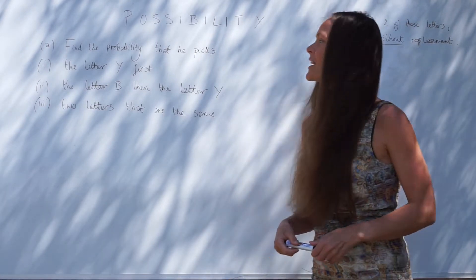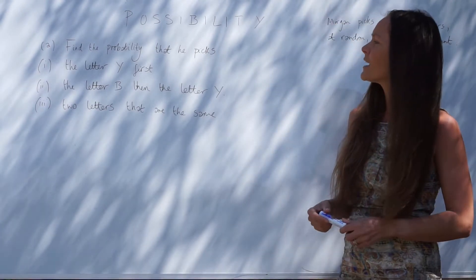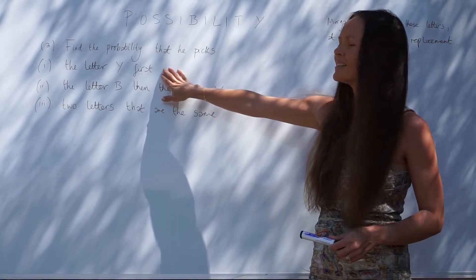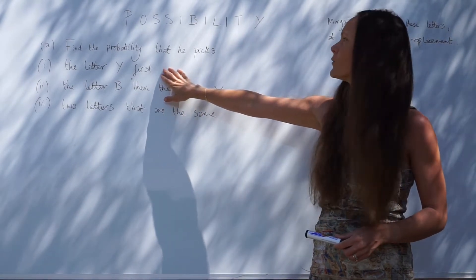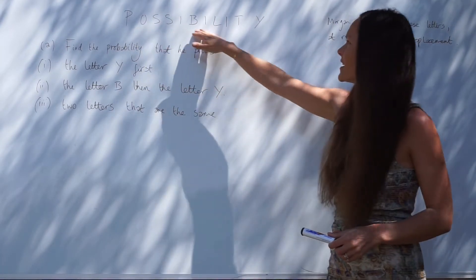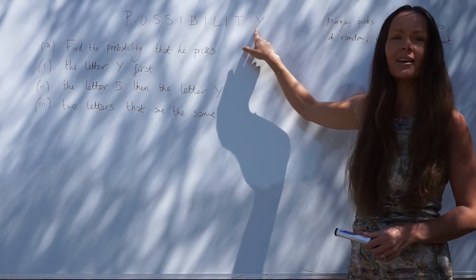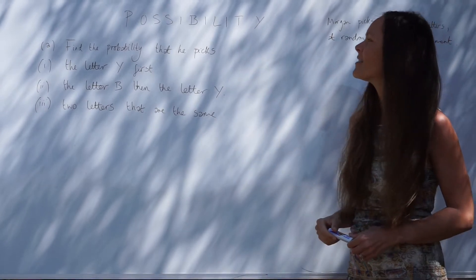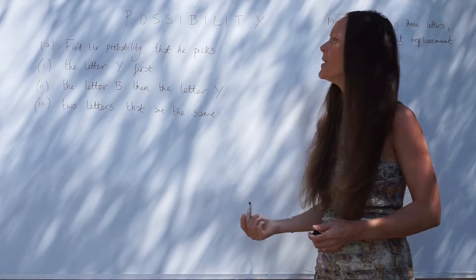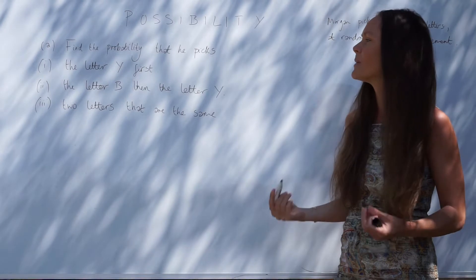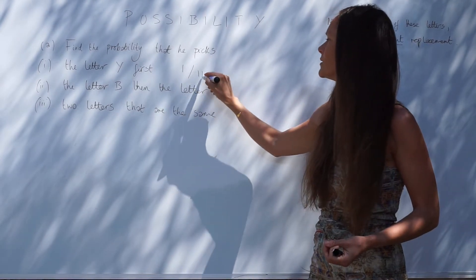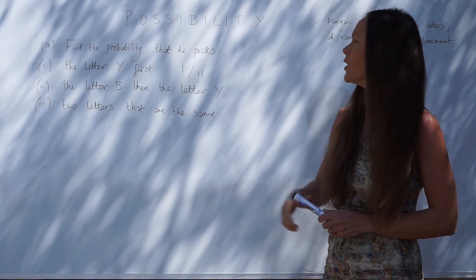So when he picks the second card there'll be one card less altogether. We have to find the probability that he picks the letter Y first. If you look at the letters there's only one letter Y and there are 11 letters altogether, so the probability that he picks the letter Y first would just be one out of 11.